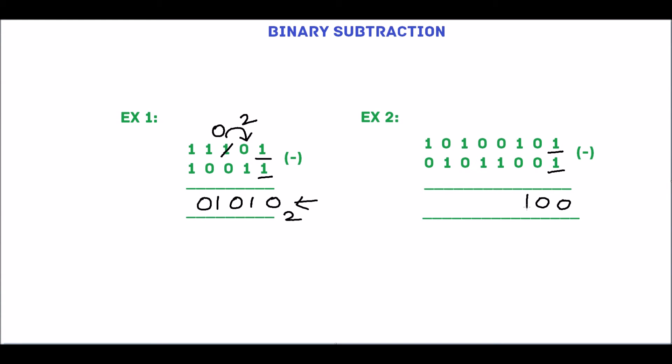0 minus 1. Take borrow from the next digit, which is 0. So, take the borrow from next digit. The borrow will be 2. 1 has given the borrow, so it will become 0.